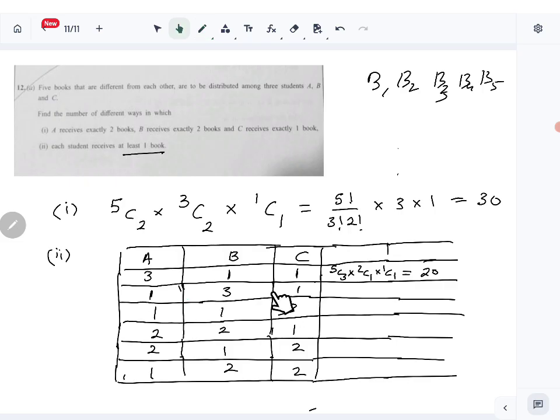You can write it out and see. You can start with 5C3 if you want, or you can do 5C1, 4C3, 1C1. You will still get the same answer: 20.